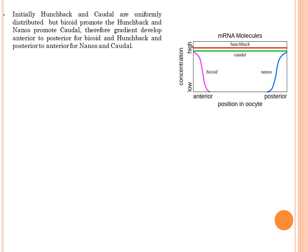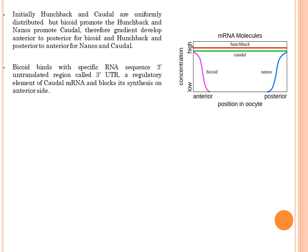Exuperantia and swallow ने bicoid को anterior axis पे, वहीं Oscar and Tudor ने nanos को posterior axis पे stabilize किया। दो major maternal genes hunchback और caudal पहले uniformly distributed होते हैं — anterior axis से लेके posterior axis तक। लेकिन आगे चलकर bicoid, hunchback की synthesis को promote करने लगता है, वहीं nanos, caudal की synthesis को promote करने लगता है। इस तरीके से anterior side पे bicoid और hunchback का concentration ज़्यादा होता है, वहीं posterior side पे nanos और caudal का concentration ज़्यादा होता है।